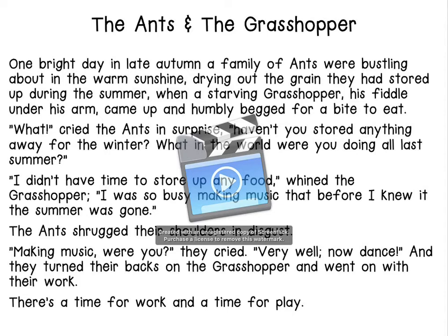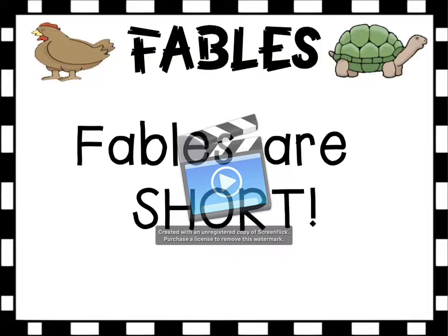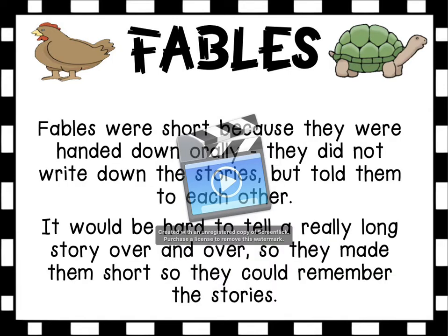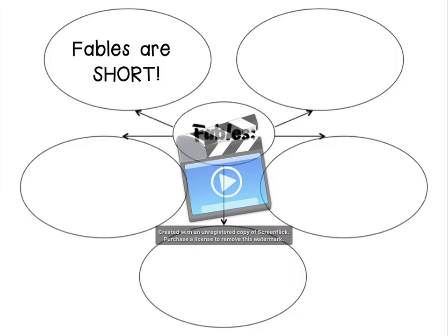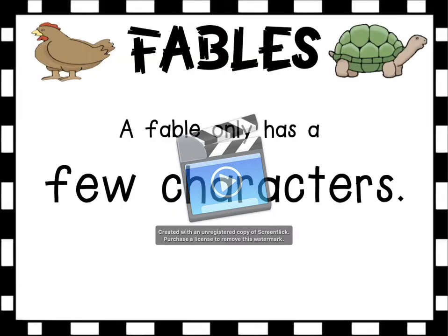If we think about that fable, you can notice some special things about it. The first characteristic of fables is that fables are short. Fables were short because they were handed down orally, which means they did not write down the stories but told them to each other out loud. It would be really hard to tell a really long story over and over and have it be the same, so they made them short so they could remember. Go ahead and add that fables are short to your fables elements organizer.